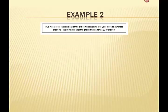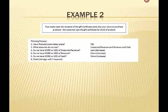Two weeks later, the recipient of the gift certificate is in your store to purchase product. The customer uses the gift certificate for $510 worth of product. A financial event has taken place for our business. What accounts do we use? We will use three — here's a new thing. We will use unearned revenue, we will use revenue, and we will use cash. Do we have more or less of unearned revenue? We have less. Do we have more or less of revenue? We have more. And do we have more or less of cash? We have a little bit more.